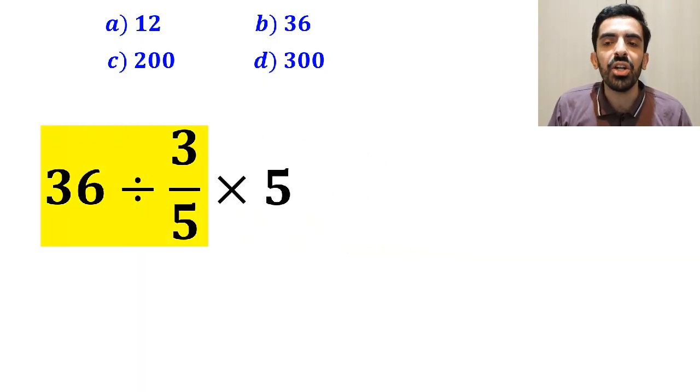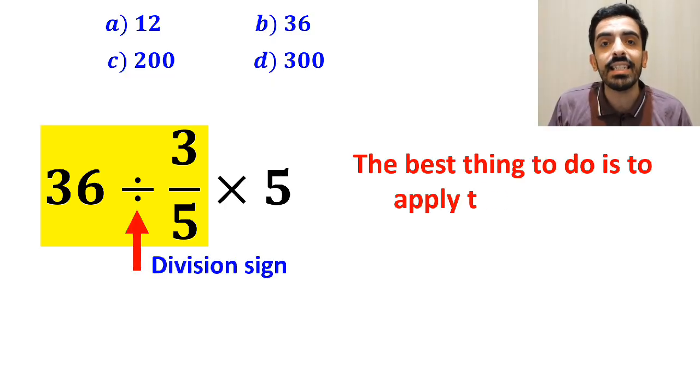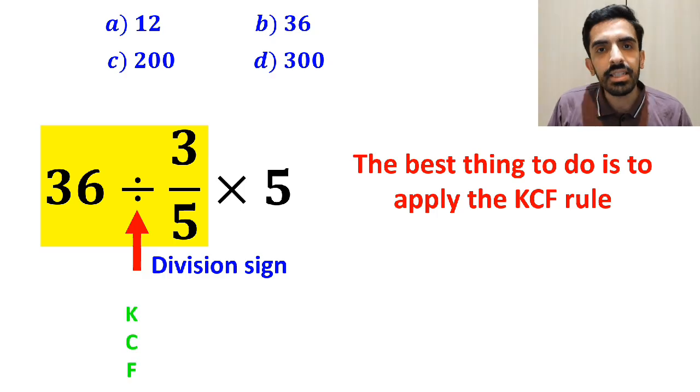So, we start with the expression 36 divided by 3 over 5. Whenever we see a division sign between two terms, the best thing to do is to apply the KCF rule.